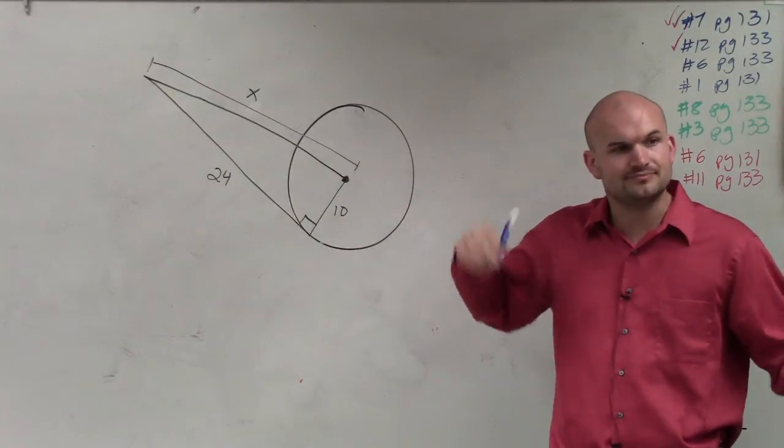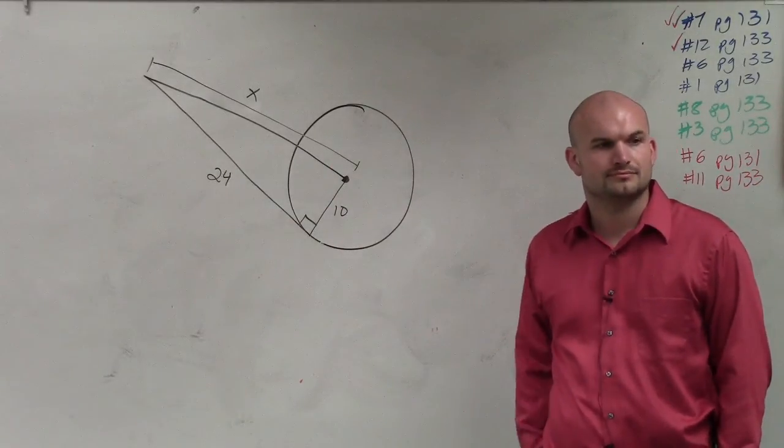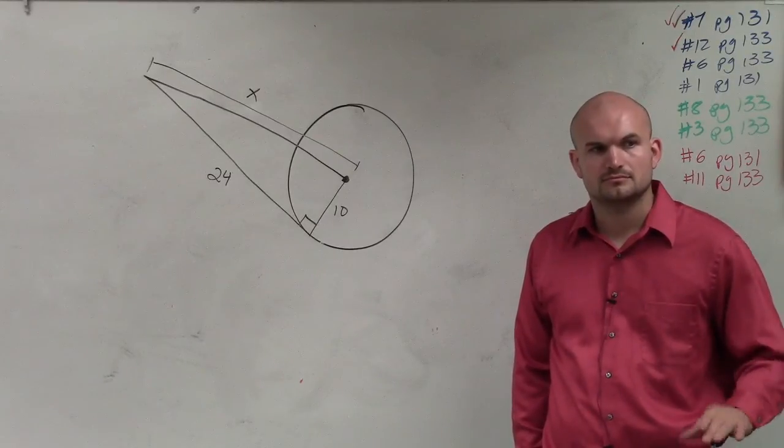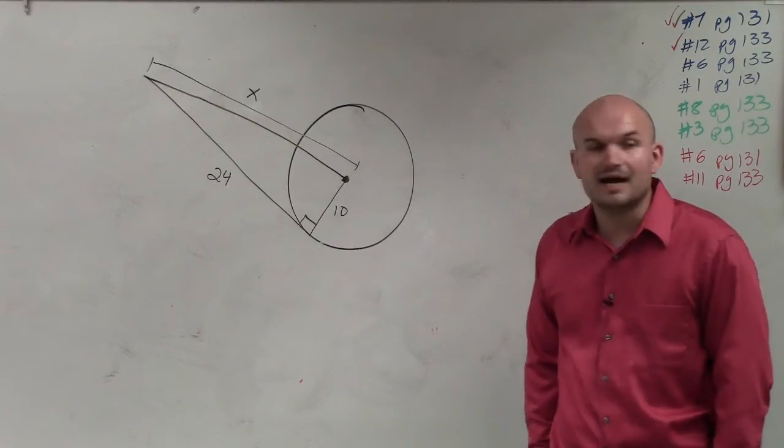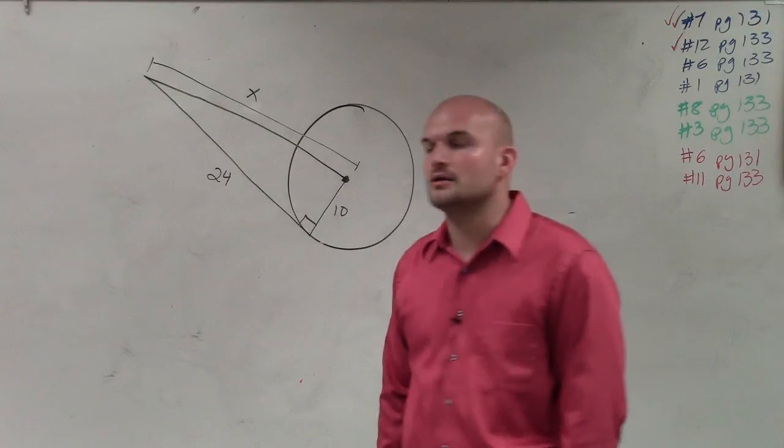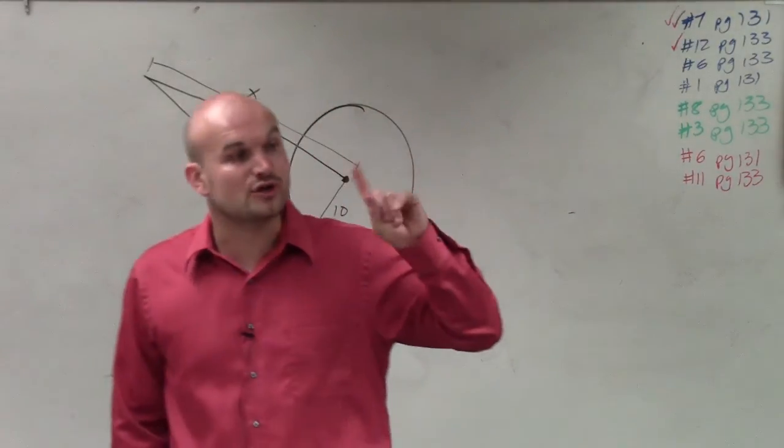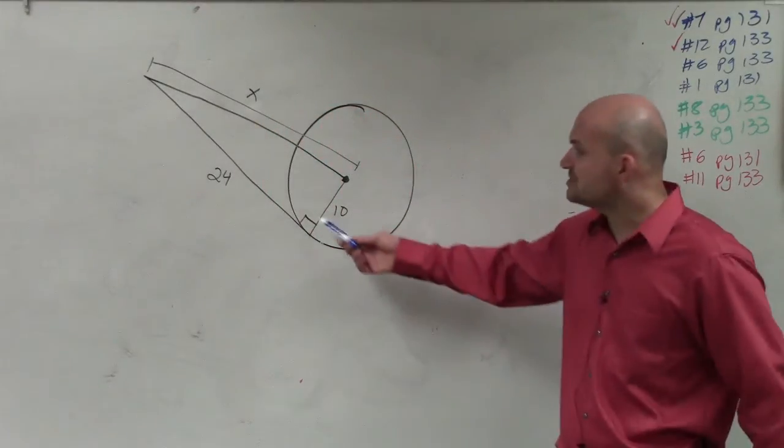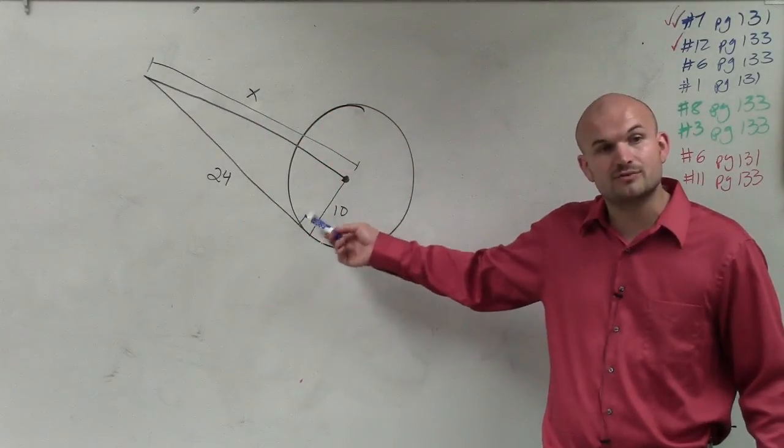Now remember, tangent lines come through a circle when they intersect the circle at one point. And also, they create a 90 degree angle. And what's important about that is we see a 90 degree angle, so we know it's tangent.